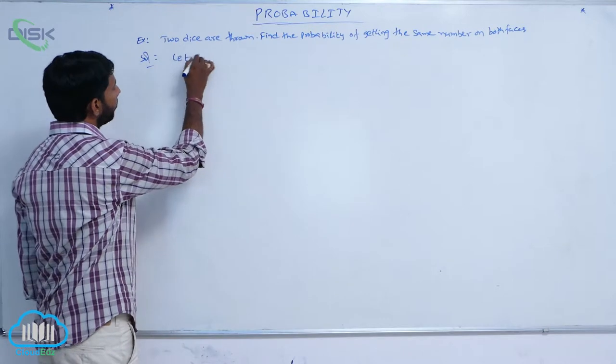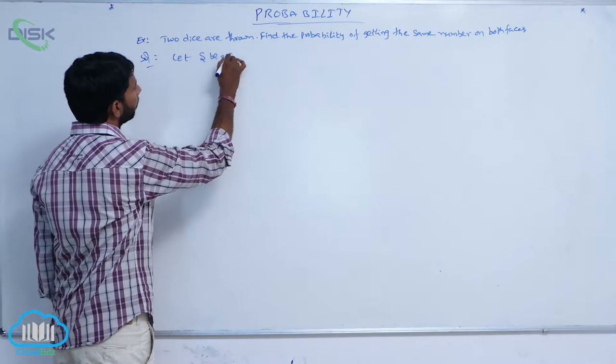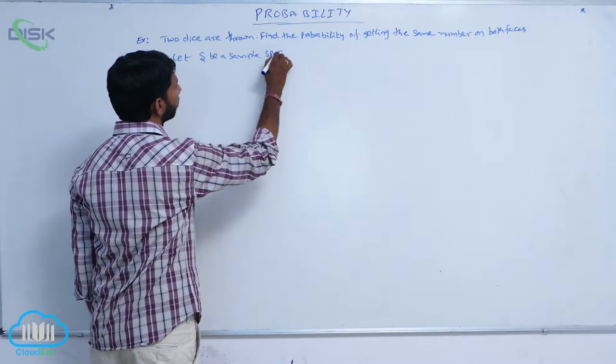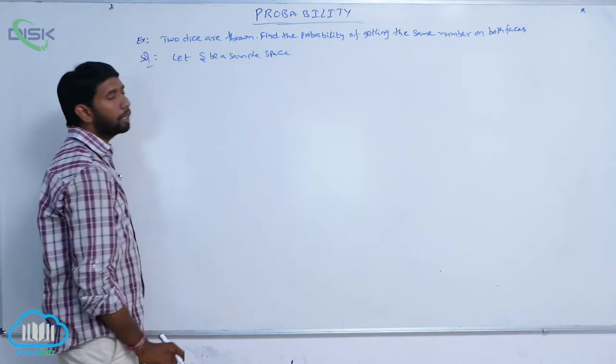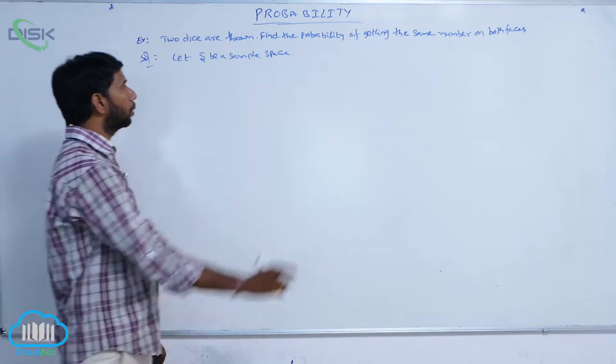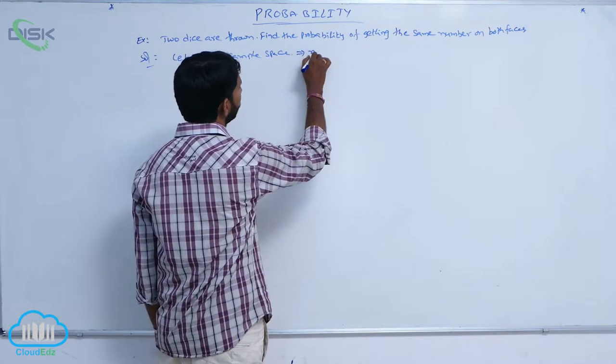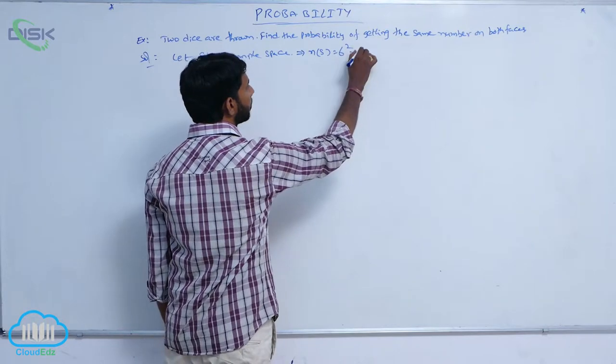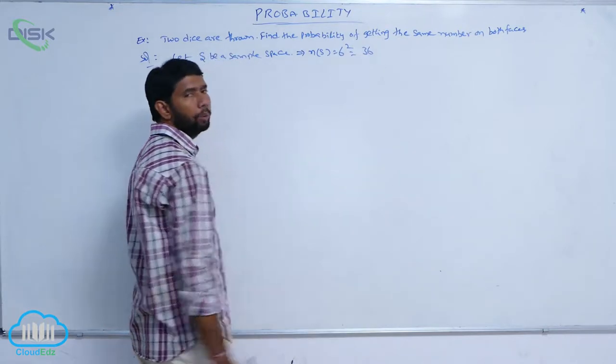Let S be a sample space. Given two dice are thrown, N of S is equal to 6 squared. The total number of cases is equal to 6 squared, that is equal to 36.